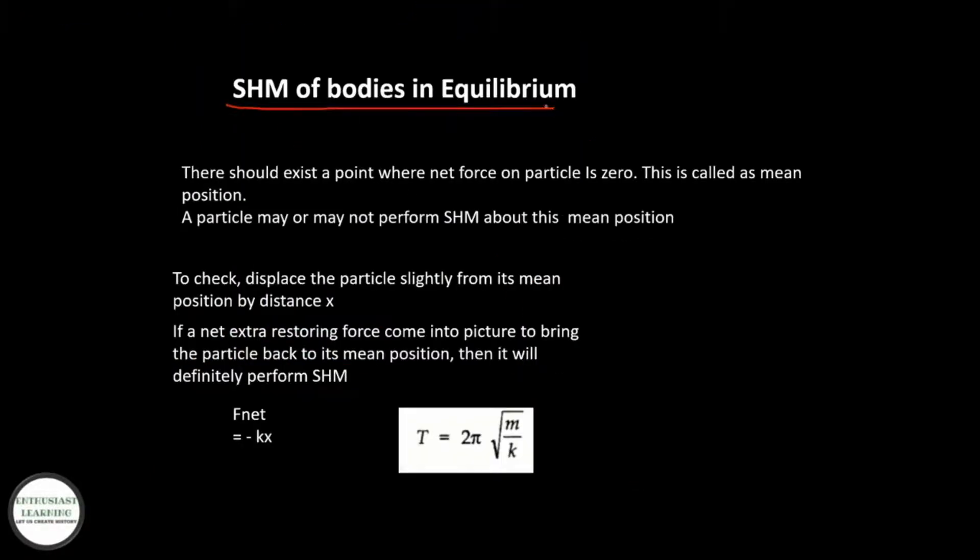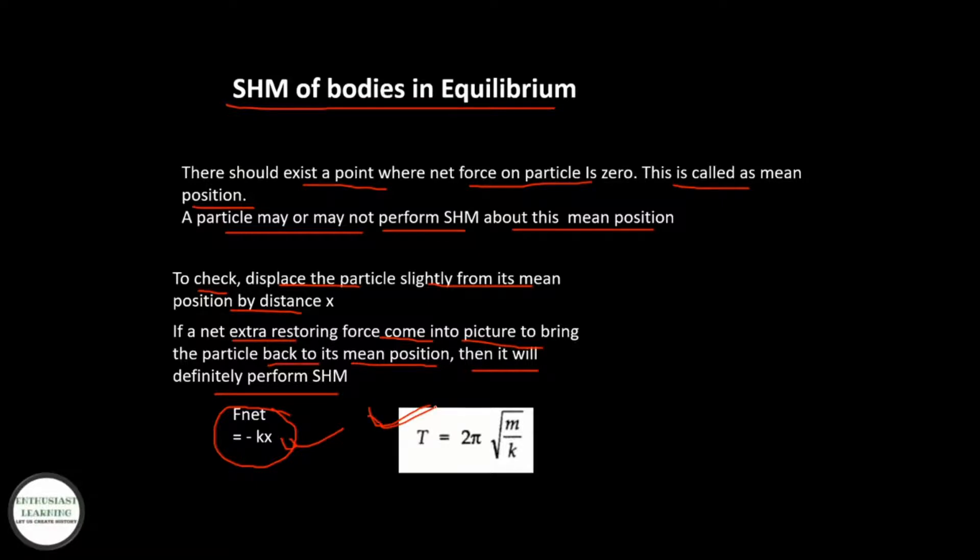SHM of bodies in equilibrium: there should exist a point where net force on particle is zero. This is called the mean position. To check, displace the particle slightly from its mean position by distance x. If a net extra force comes into the picture to bring the particle to its mean position, then it will definitely perform SHM. If F_net = -kx, then T = 2π√(m/k).